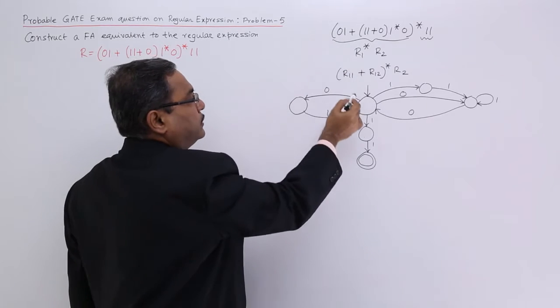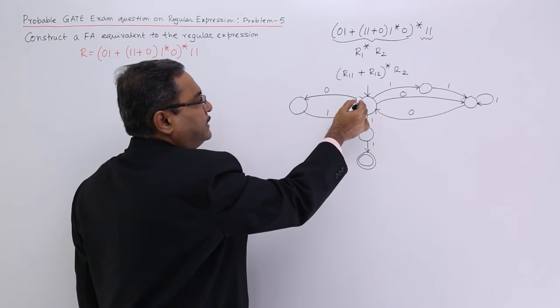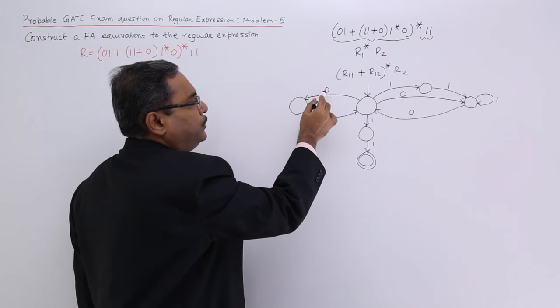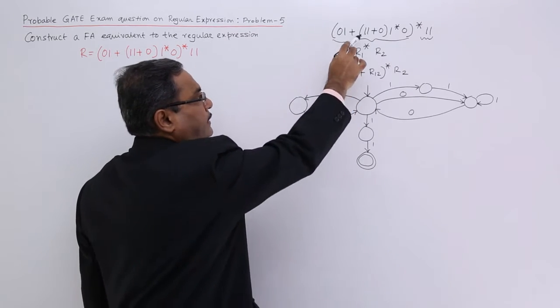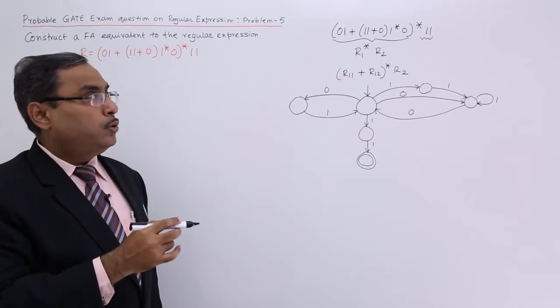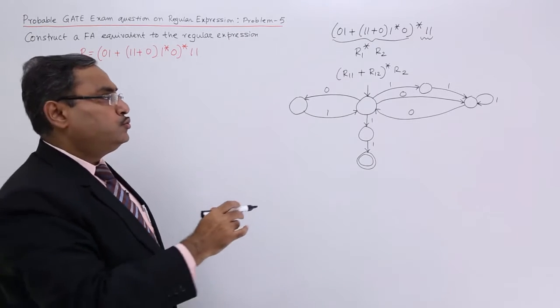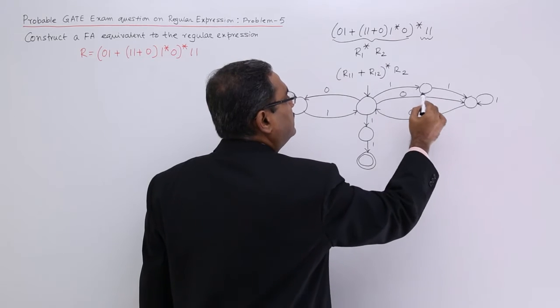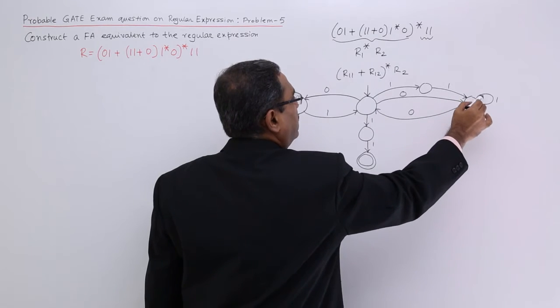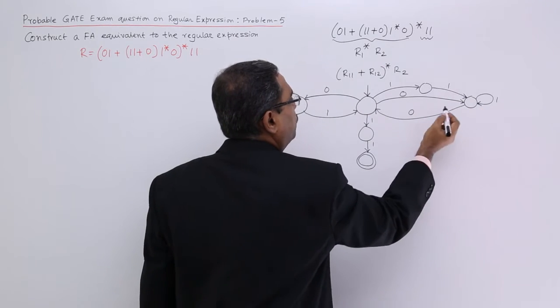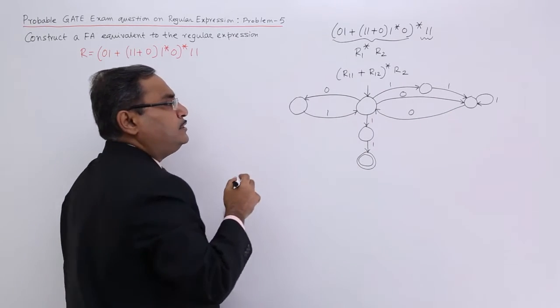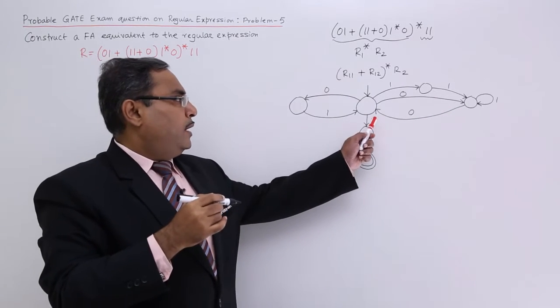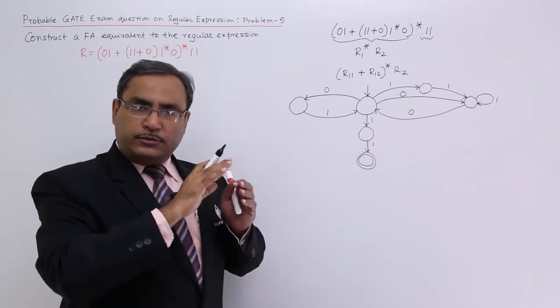We are having 0 1, going from this initial state to this state using 0 and for input 1 I shall come back. This is my 1 1 plus 0 1 star 0. Either I can go using 1 1 or a single 0 then I shall have 1 star that means it will go for a self loop and then I shall come back using 0.